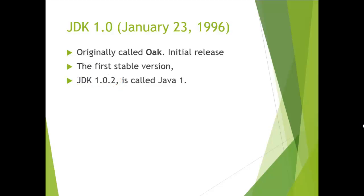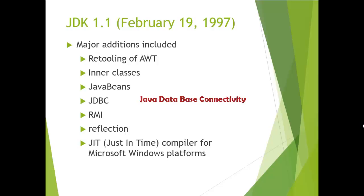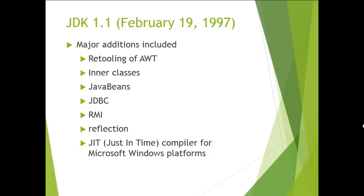After that, JDK 1.1 was released on 19th February. The major additions included in this version are: retooling of AWT components (used to develop window applications), introduction of inner classes, JavaBeans, JDBC (Java Database Connectivity), RMI (Remote Method Invocation), Reflection, and a JIT (Just-In-Time) compiler for the Microsoft Windows platform.